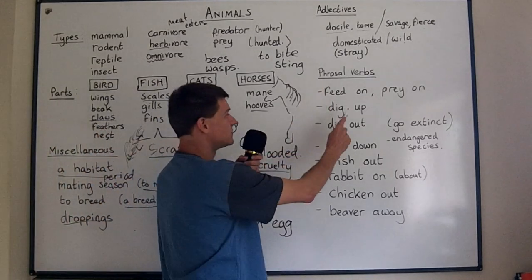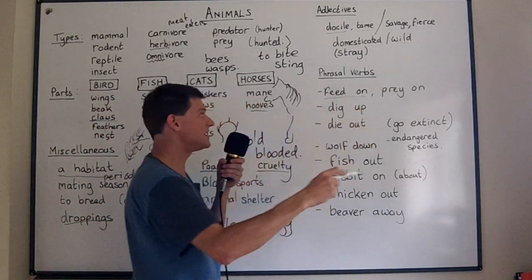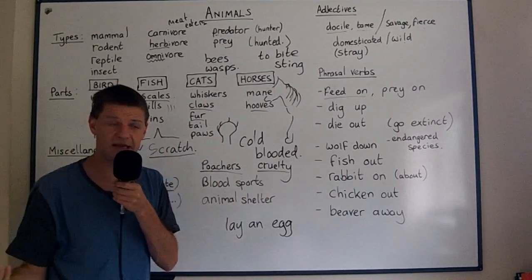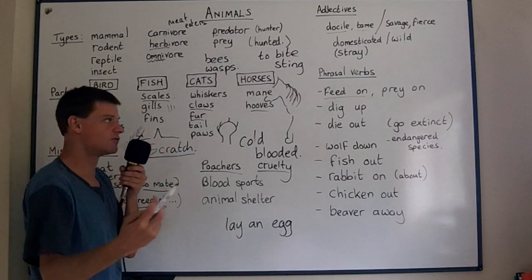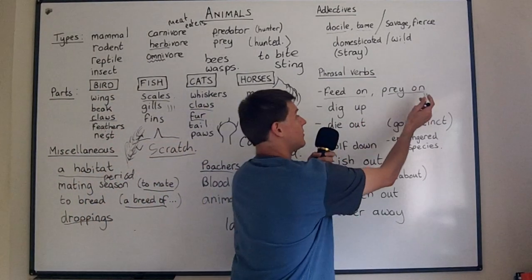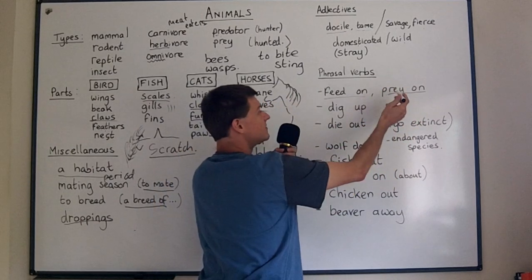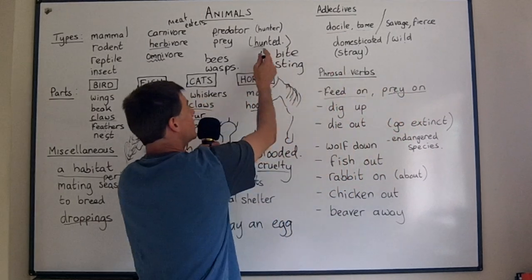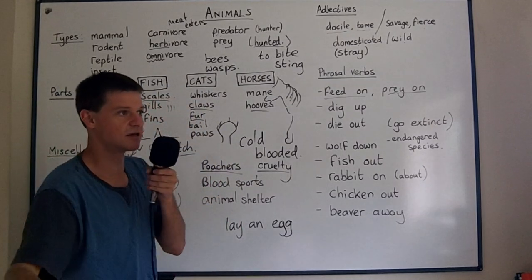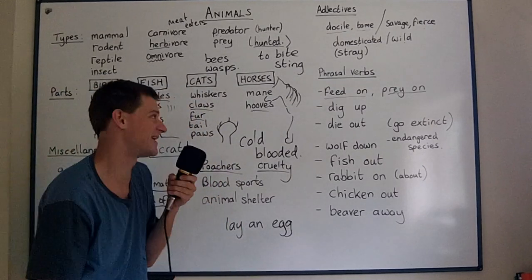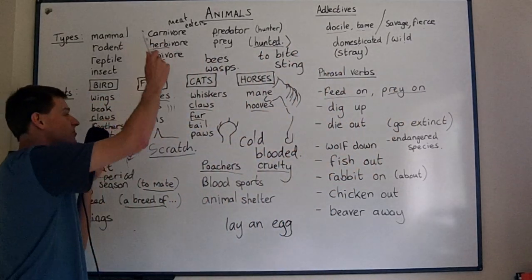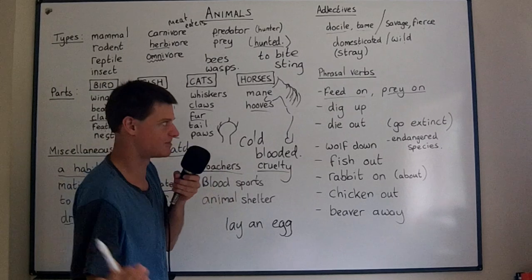Some phrasal verbs: animals feed on different things. If you want to say what an animal eats, you can say 'the frog feeds on the flies around the pond.' You could also say prey on, which means the same as feed on — for example, tigers prey on small or large mammals.